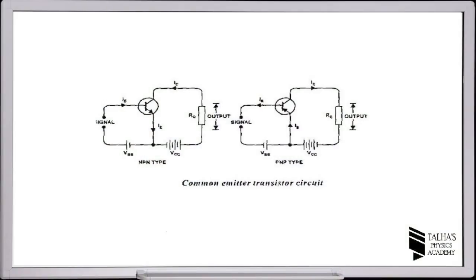The output is collected at the collector and emitter junction. The input current is the base current, the output current is the collector current, and the ratio between collector current to the base current is known as the current amplification factor. For both NPN and PNP transistors, the connections are done in such a way that the emitter is kept common between input and output circuit.